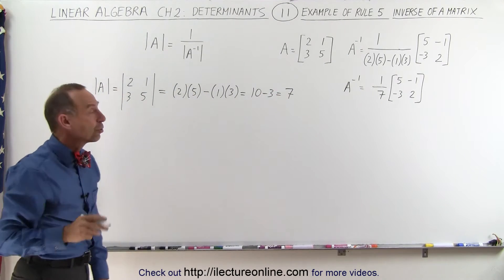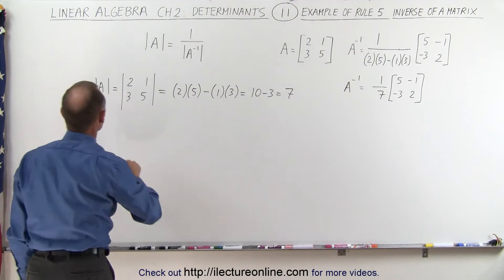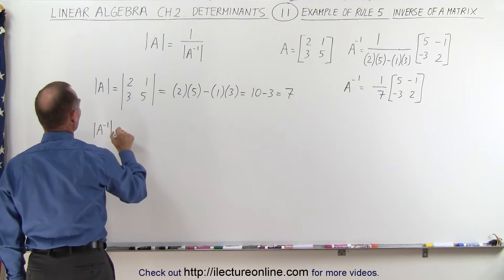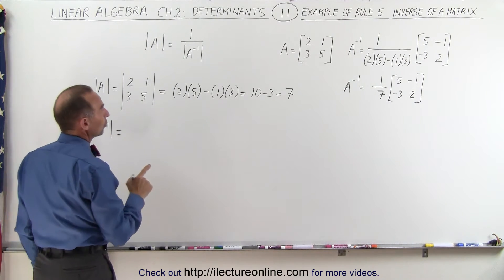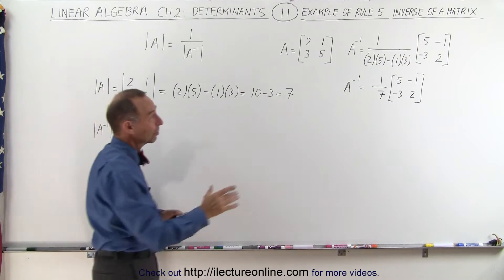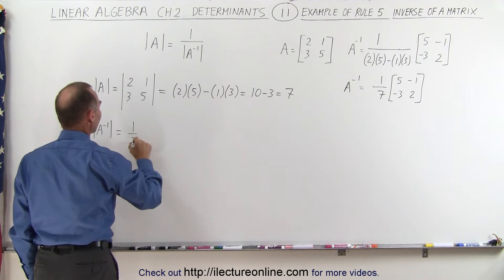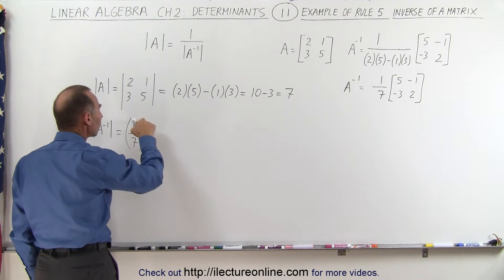Now we're going to take the determinant of the inverse of matrix A. So we have the inverse of matrix A, take the determinant of that which is equal to—since that matrix here is multiplied times a constant, we have to take 1 over 7 raised to the order of the matrix. In this case the order is 2 because it's a 2 by 2 matrix, so 1 over 7 raised to the second power.